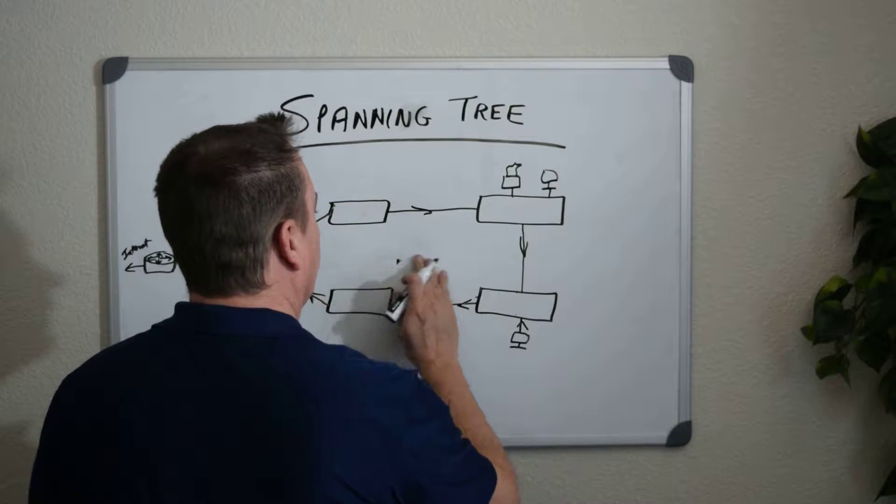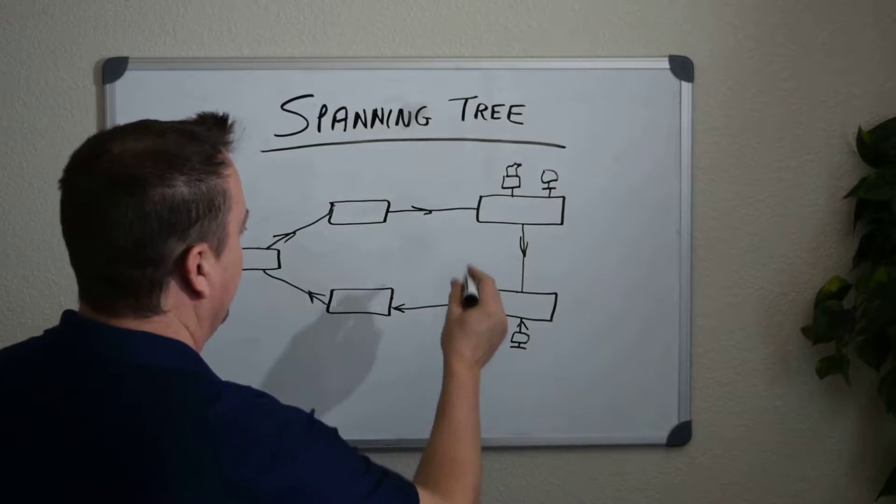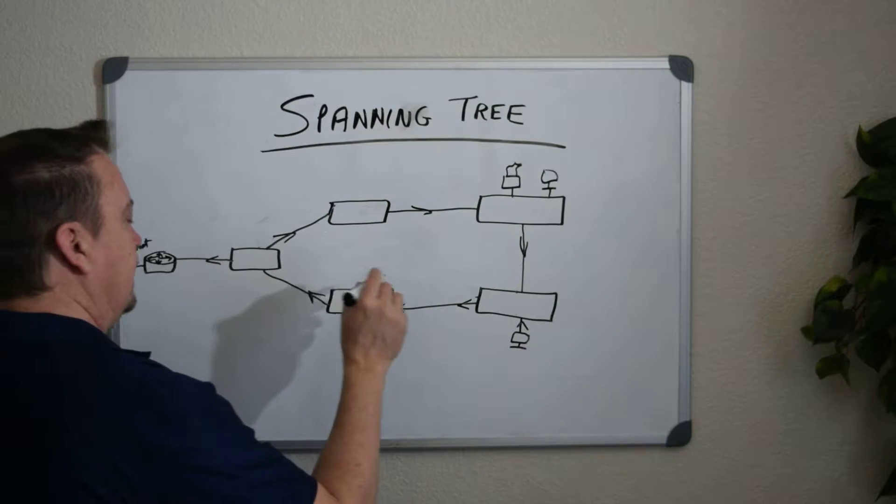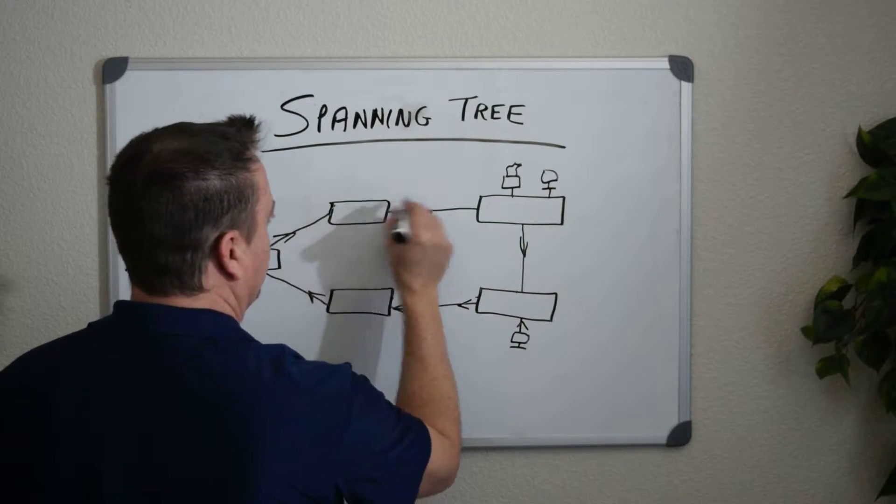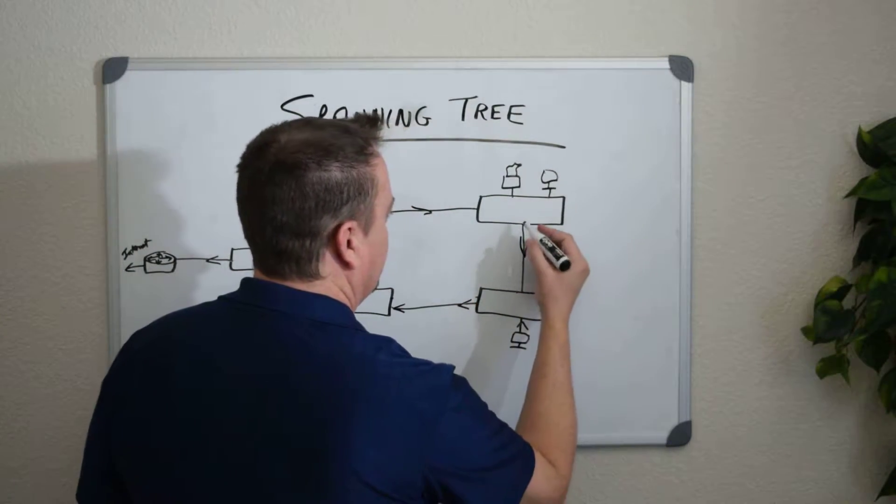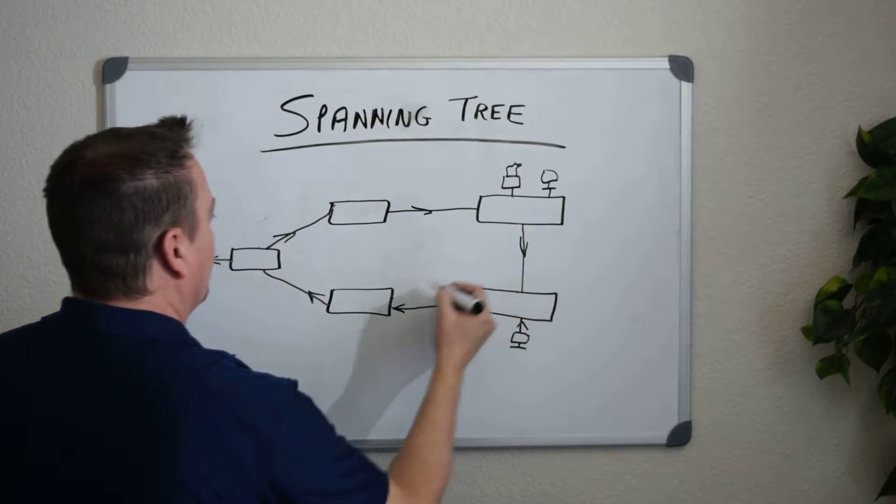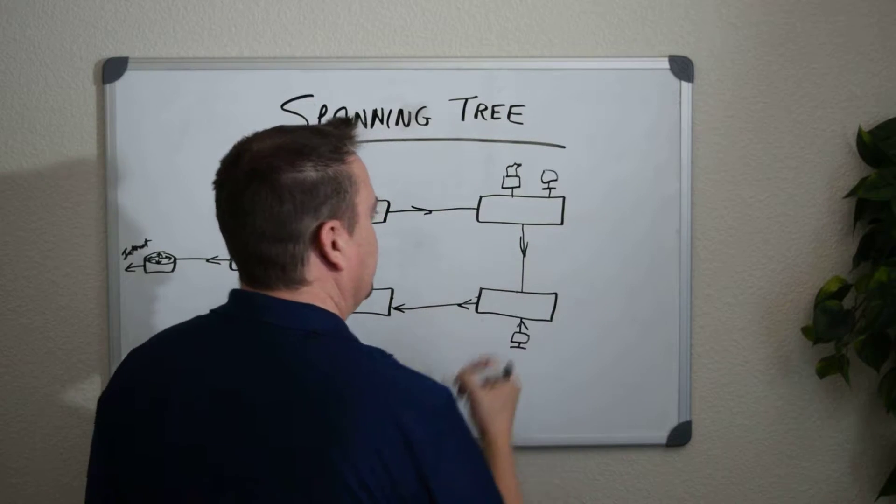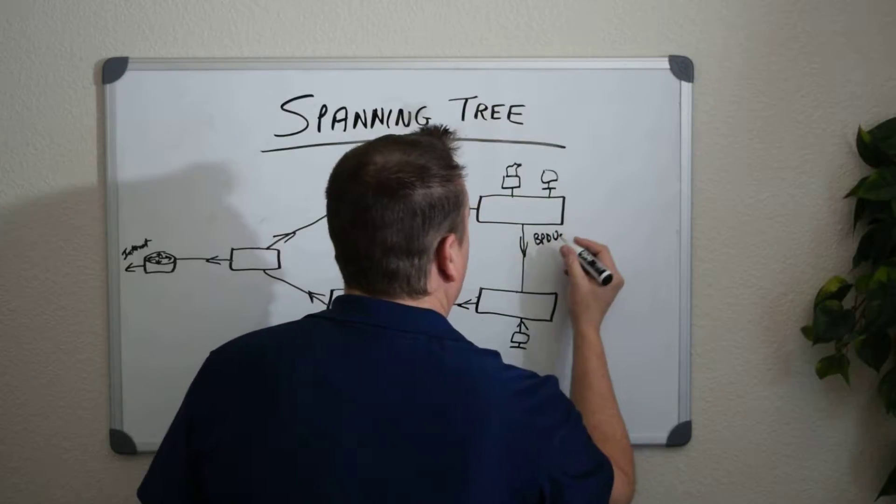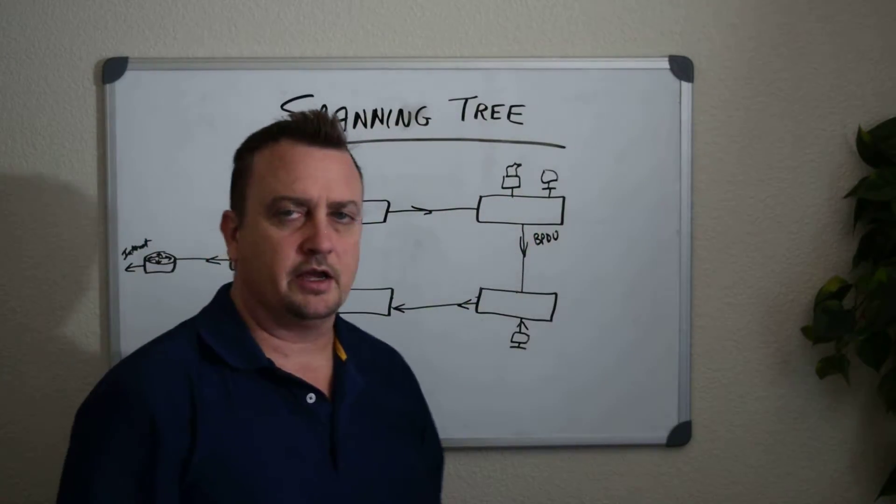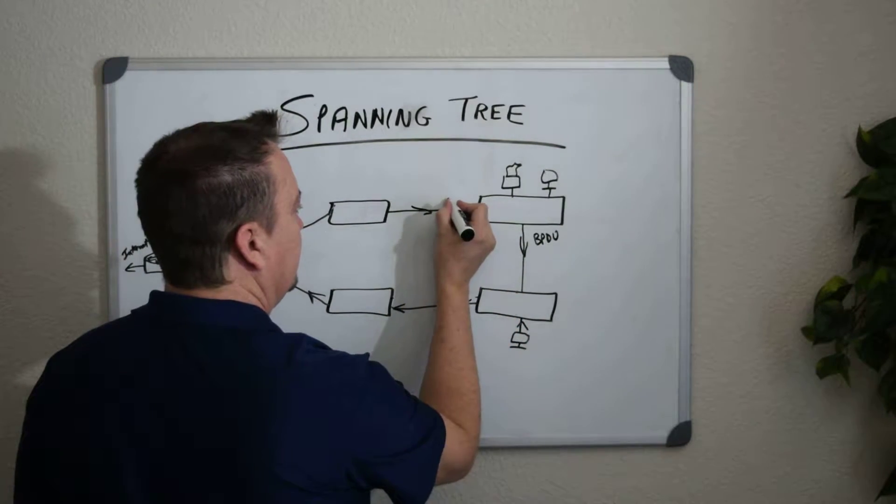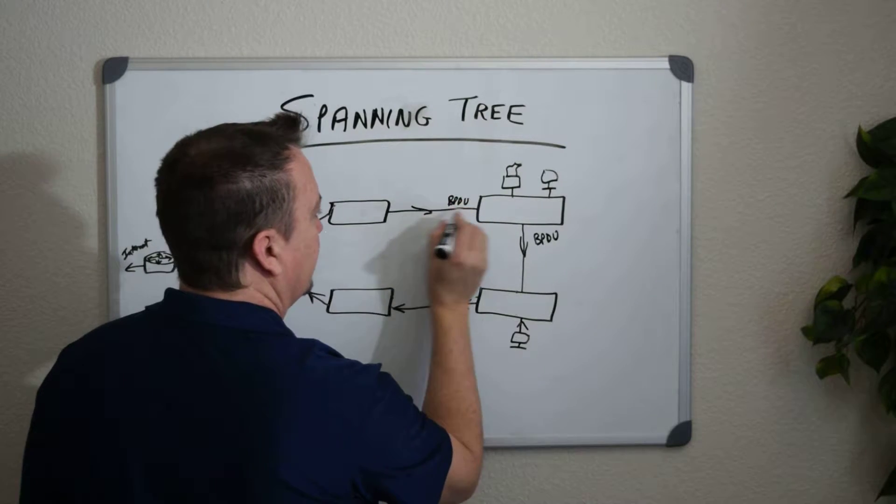And Spanning Tree was developed primarily to handle when these physical loops are detected. So Spanning Tree says, okay, I detect a loop here. Now you want to have Spanning Tree running on typically all of your Layer 2 devices, all of your switches. Spanning Tree set on this switch says, I detect a loop here going back here because I send out what's called a BPDU in Spanning Tree. It's kind of a test packet that it sends out. Sends this out this interface, and it gets the same BPDU back on this interface.